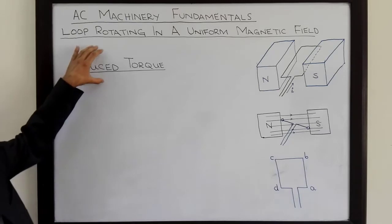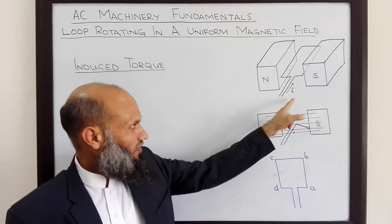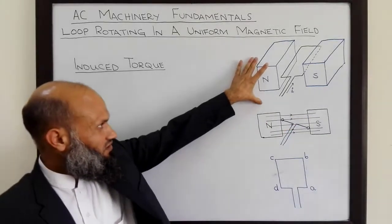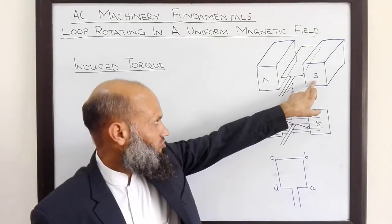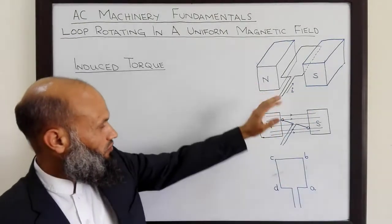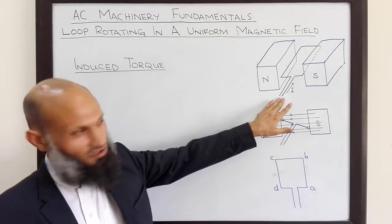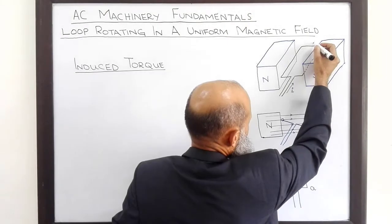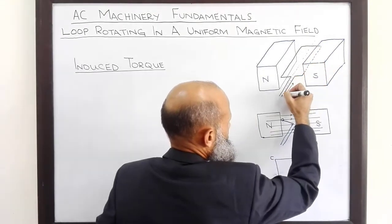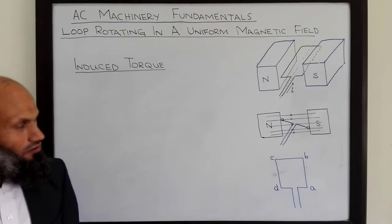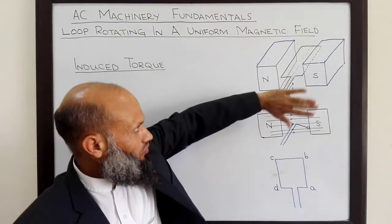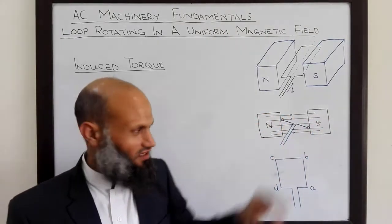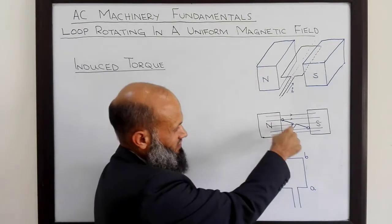we shall derive an expression for torque induced in this coil when current I is flowing in this coil. This arrangement is simple. We have north pole and south pole, and inside these poles there is a coil in the free space. This coil can rotate about its axis. If we look at the front view of this diagram, we have this situation: north pole and south pole, uniform magnetic field.